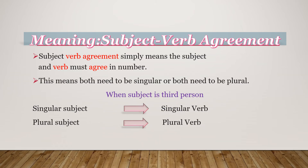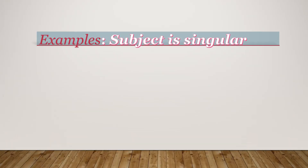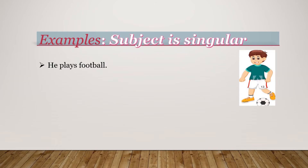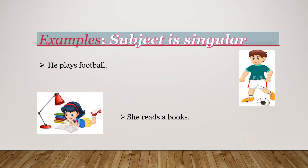This rule applies when the subject is third person. If the subject is first or second person, then the rule doesn't apply. Let us see some examples when the subject is singular. He plays football — here, the word he is singular, and the verb is also singular, that is plays. We use 's' with singular verbs. Second example: She reads a book — here, the word she is singular, and reads is also a singular verb.